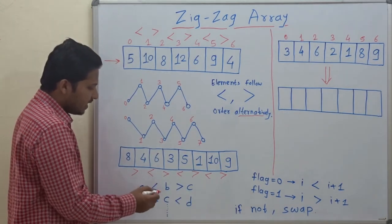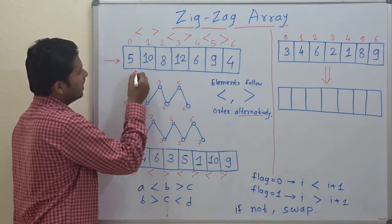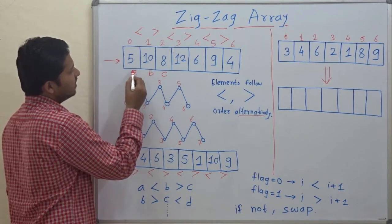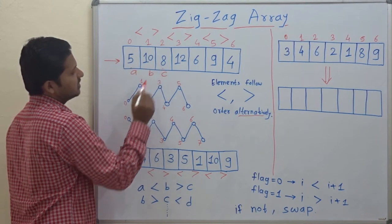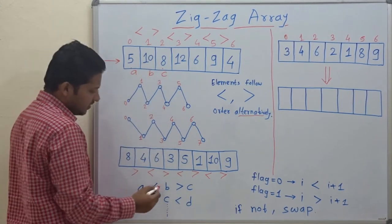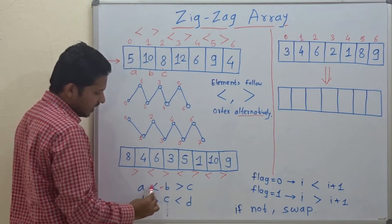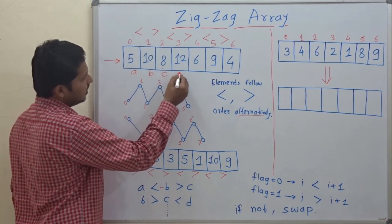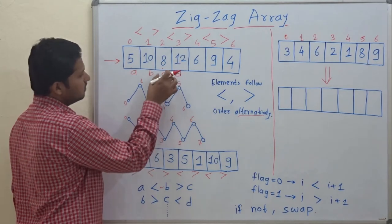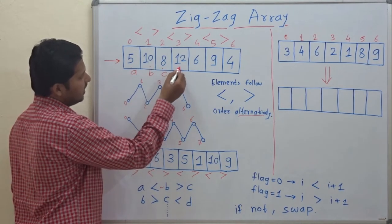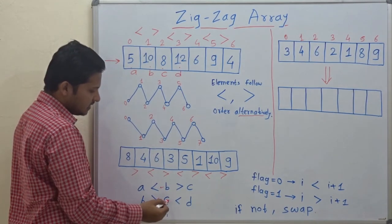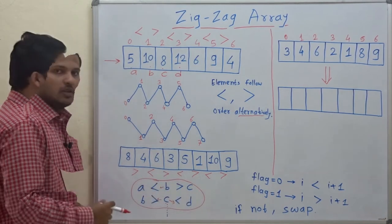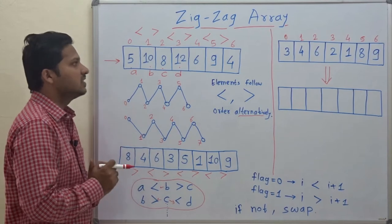In a zigzag array, consider three elements a, b, and c. You can observe that b is greater than both of its neighbors — b is greater than a and b is greater than c. For element c, if we consider its next element as d, then c is less than its neighbors. So c is less than both its neighbors.